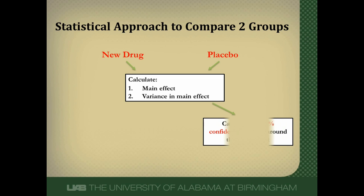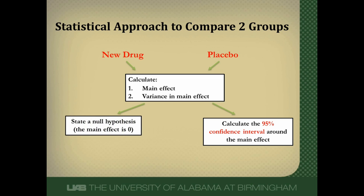One pathway we could go down would be something called estimation, where we calculate a confidence interval — traditionally a 95% confidence interval — around this main effect. I have a previous video describing confidence intervals and we're not going to talk about that anymore in this video. What we are going to talk about is hypothesis testing.